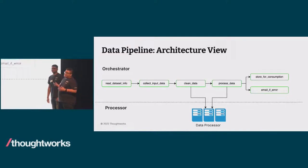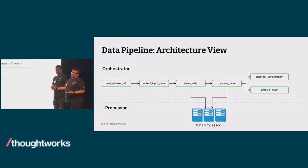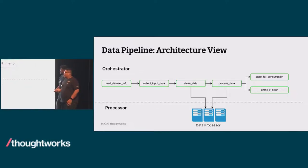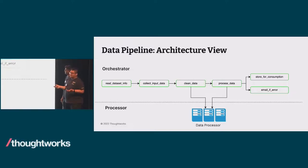Let's look at a data pipeline from the architecture point of view. In a data pipeline, there could be two primary layers: the orchestrator and the processor. An orchestrator can help break down the data pipeline into granular tasks from the three stages mentioned earlier. For the collect stage, it can break down into two tasks: reading the data source info — retrieving information such as where the file is located and the file name pattern — and then collecting the input data using that information.